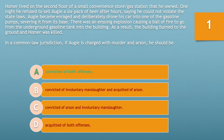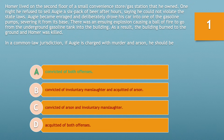Under the felony murder rule, a person can be found guilty of a killing that occurs during the commission of an underlying felony that is inherently dangerous, such as burglary, arson, rape, robbery, or kidnapping. The typical anagram I like to use is BARRK: B for burglary, A for arson, R for rape, R for robbery, K for kidnapping.